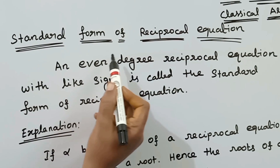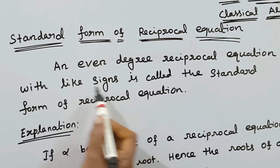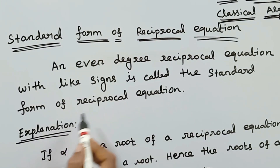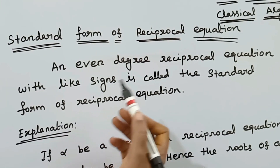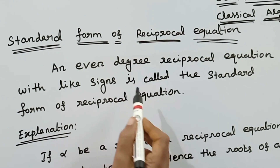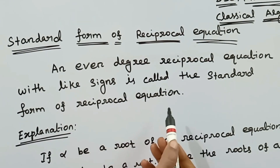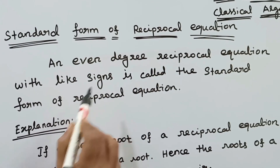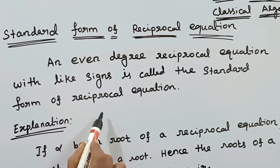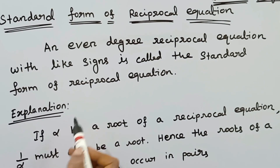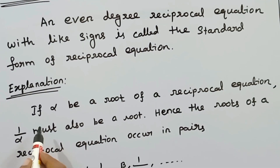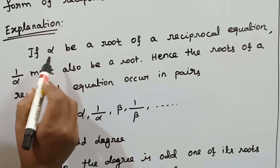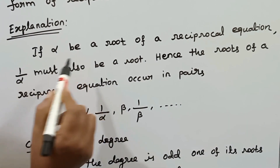In classical algebra, the standard form of a reciprocal equation is an even degree reciprocal equation with like signs. We discussed like sign and unlike sign in previous videos. If alpha is a root of a reciprocal equation, then 1 by alpha must also be a root. That is the defining property of a reciprocal equation.